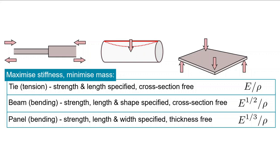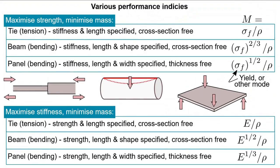What if strength mattered instead, with the modulus fixed? Well, if the modulus is fixed, then the stiffness, too, is fixed on the basis of geometry. To maximize strength and minimize mass, then these performance indices are used for each of the components described.